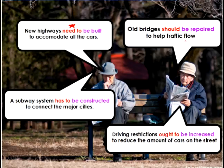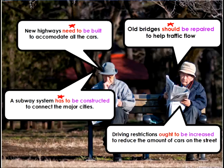This man says, 'Old bridges should be repaired to help traffic flow' — again using a modal and the passive voice. Another suggestion: 'A subway system has to be constructed to connect the major cities' — using the modal 'has to' with the passive voice. And the last suggestion: 'Driving restrictions ought to be increased to reduce the amount of cars on the street' — using the modal 'ought to' with the passive voice.